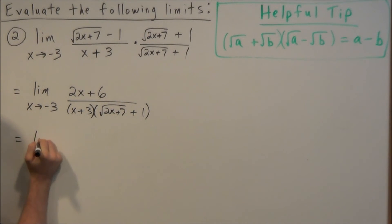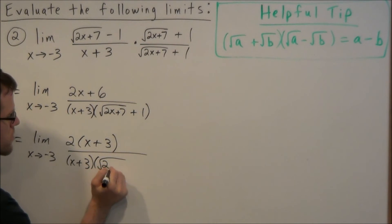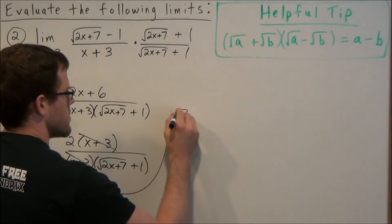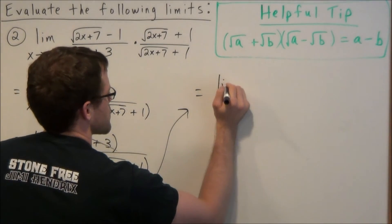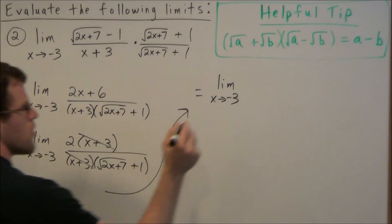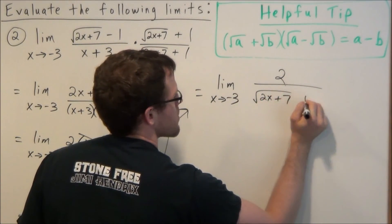So we're going to have, for the next line, the limit as x approaches negative 3, and we have 2 times x plus 3 over x plus 3 times radical 2x plus 7, and then plus 1. So now the x plus 3, x plus 3 cancels, and we could rewrite this limit as the limit as x approaches negative 3, and we have 2 over radical 2x plus 7, and then plus 1.